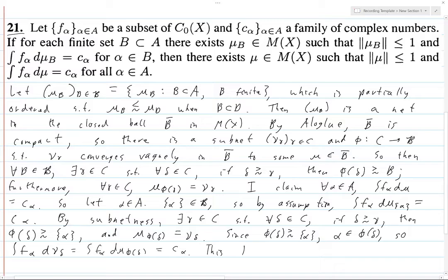This holds for all delta squiggly greater than gamma. And so, by vague convergence, I'm just going to fit on this line. We'll have integral f_alpha d mu equals c_alpha.